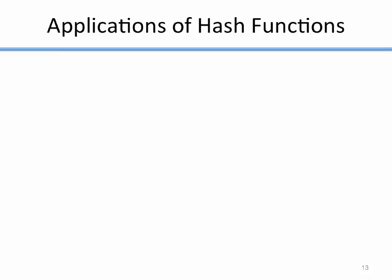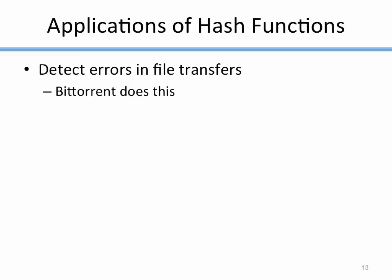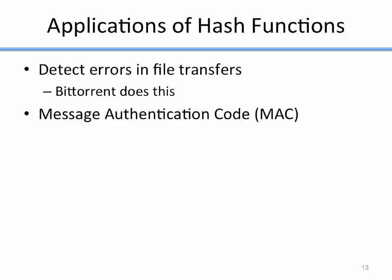What are some applications of hash functions? I'll talk about four here. First, hash functions are used to detect errors in file transfers — BitTorrent does this. Second, message authentication codes incorporate a key into a hash so you can send a hash that only someone who knows the key can verify. Third, password storage — storing hashed passwords instead of plain text. Hash functions are used all over computer science, so understanding them is valuable even outside of security.